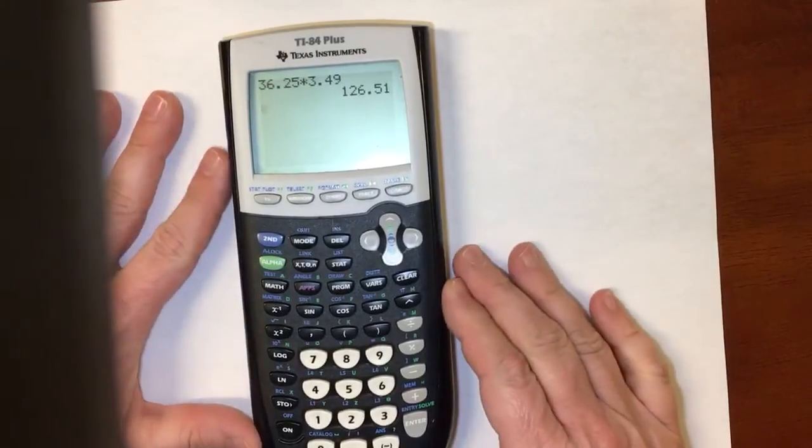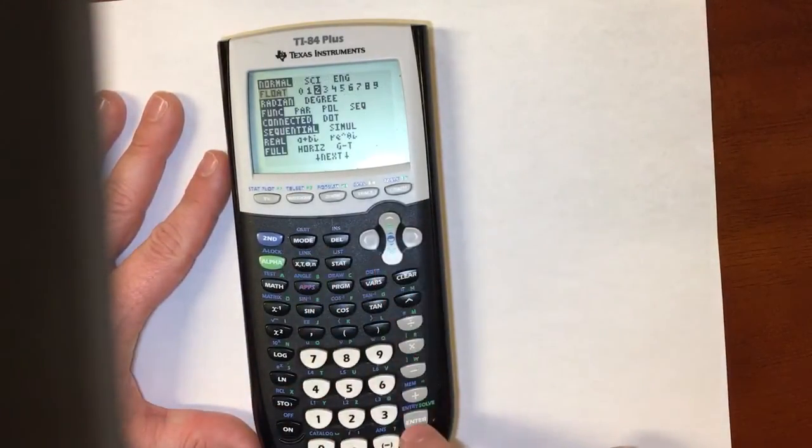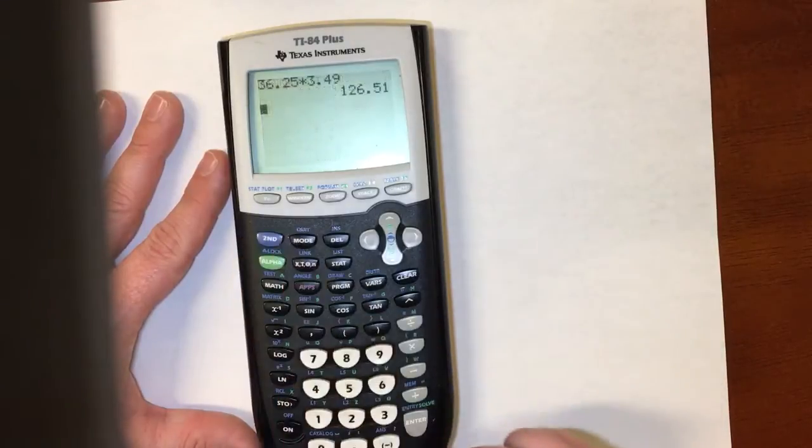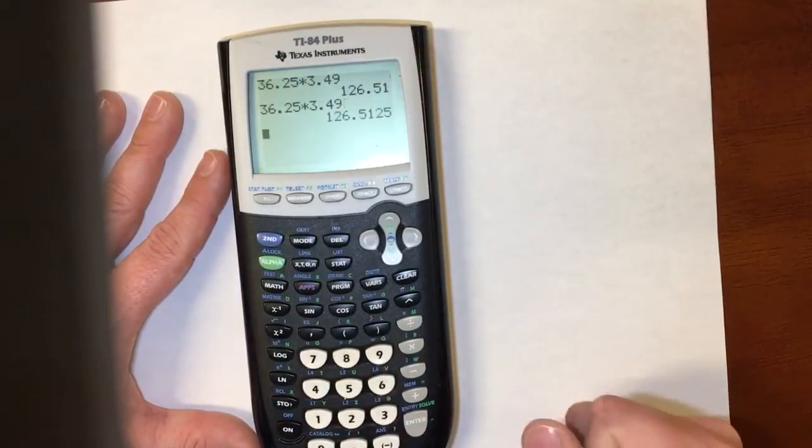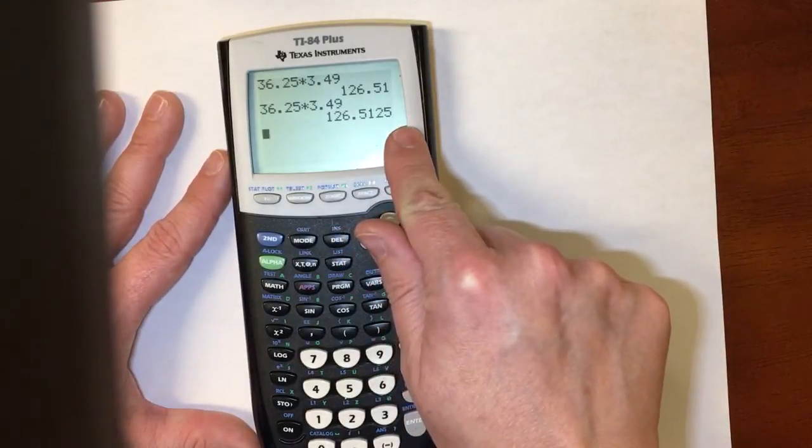But let's see what would happen if we turn this off. If I turn it off and I multiply these numbers together, I'm going to get two extra digits.